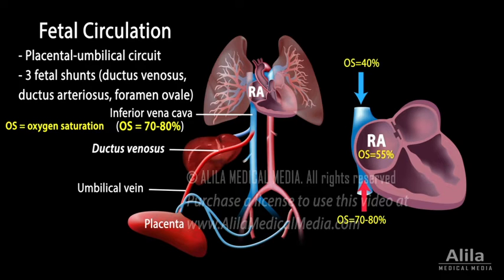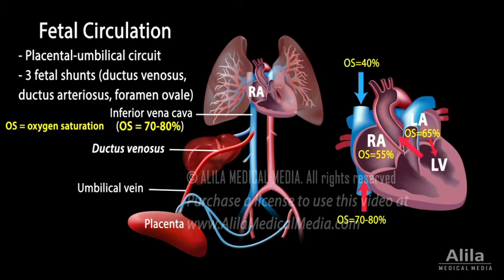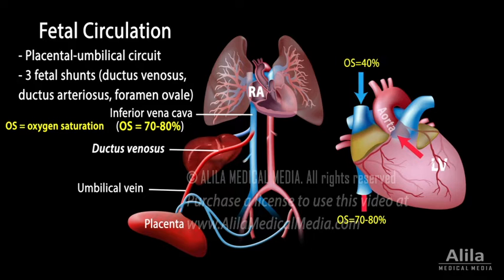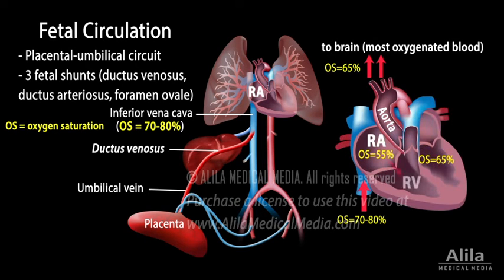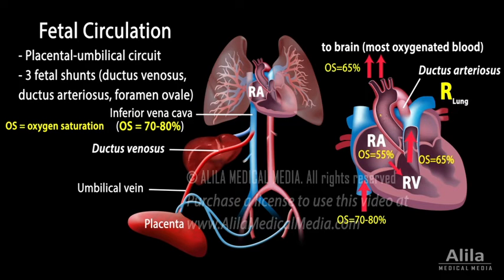Fetal blood bypasses the pulmonary circuit in two ways. First, part of the blood passes directly from the right atrium to the left atrium via an opening in the interatrial septum called the foramen ovale. It then travels through the left ventricle to coronary arteries and the aorta, which branches to provide blood to the brain. Second, part of the blood flows to the right ventricle and is pumped to the pulmonary trunk, but most of this blood is immediately shunted into the aorta via the so-called ductus arteriosus. This happens because the collapsed fetal lungs put up a much higher resistance than the blood pressure in the aorta.